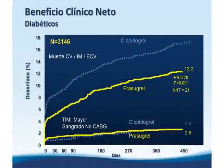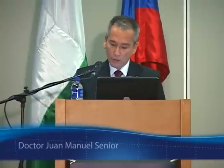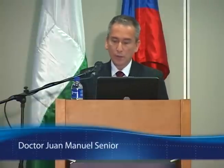El subgrupo que más se benefició con prasugrel fue el de pacientes diabéticos: el sangrado fue similar, pero el beneficio fue mucho mayor, con un NNT de 21, la mitad del NNT general. Los diabéticos son los que más se benefician del prasugrel según el estudio TRITON-TIMI 38.